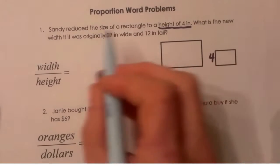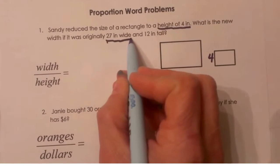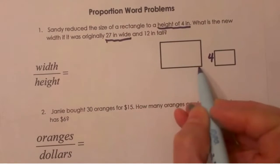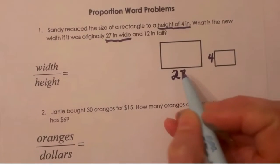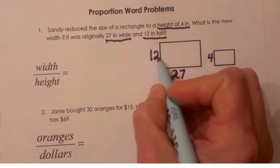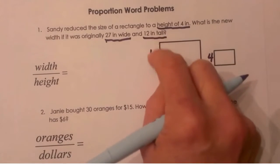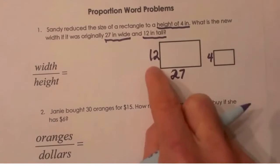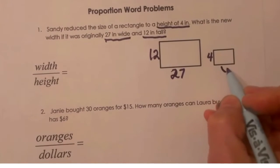And then down here I know that the original width was 27 inches wide, so I'm going to label that as 27, and then it was 12 inches tall. So I'm going to label my height 12. Now I can see proportionally my height goes with my height and my width goes with my width. And I don't know this one so I can call that X.